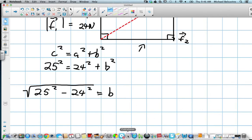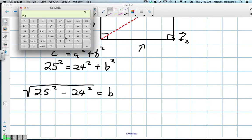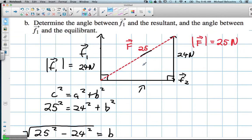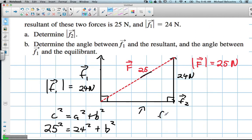25 squared, subtract. I don't know if my calculator is good enough to do this all in two steps. Root 49. Someone double-check that for me. So in other words, our other force here, force 2, has a magnitude of 7 newtons.